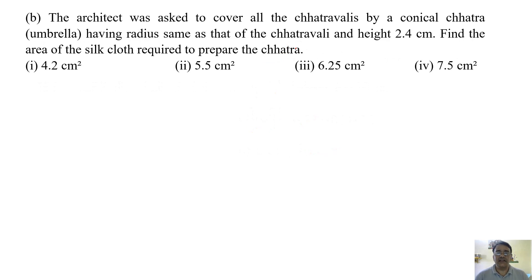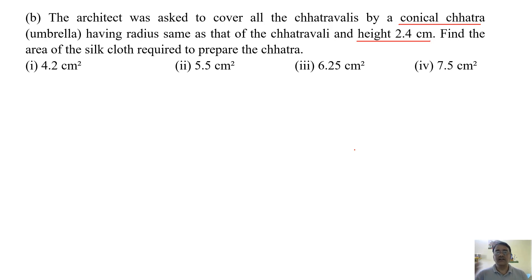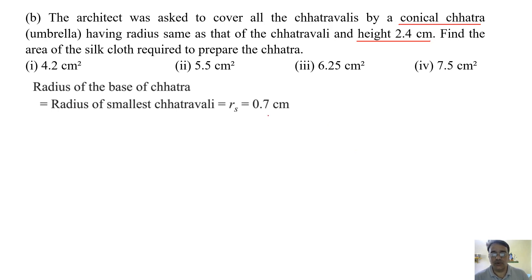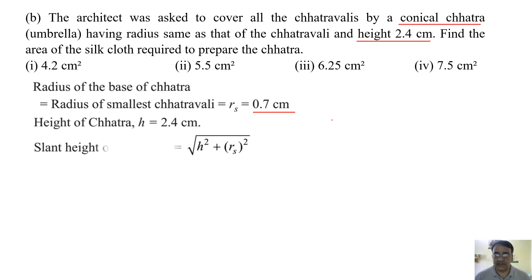The second question: the architect was asked to cover all the chatra valleys by a conical chatra (umbrella) having a radius same as that of the chatra valley and height 2.4 centimeters. Find the area of silk cloth required to prepare the chatra — that means only the curved surface area. The formula for curved surface area of a cone is π r l. The radius is given as 0.7 centimeters and height is 2.4 centimeters. We know l = √(r² + h²).